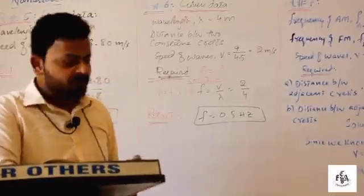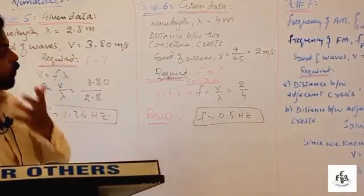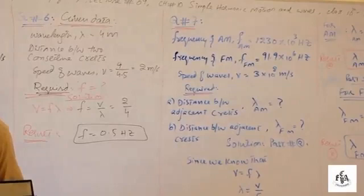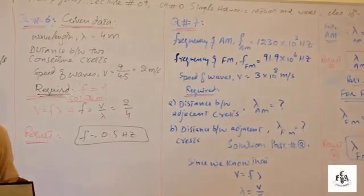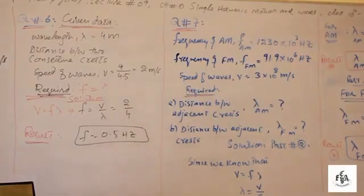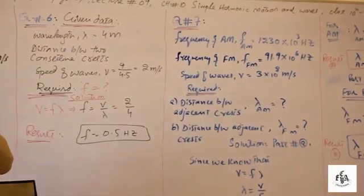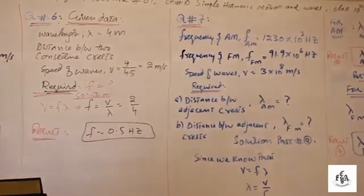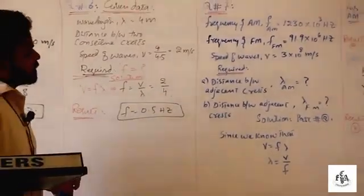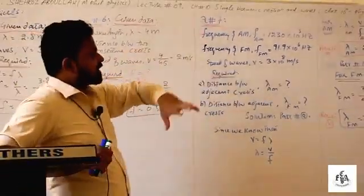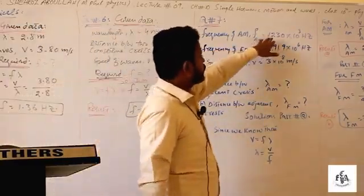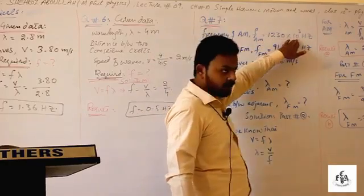Now coming to the last numerical of chapter one. A station broadcasts AM waves whose frequency is 1230 × 10³ Hz, and FM waves whose frequency is 91.9 × 10⁶ Hz. We need to find the distance between adjacent crests — that is, the wavelength — for each wave. The AM frequency given is 1230 × 10³ Hz.